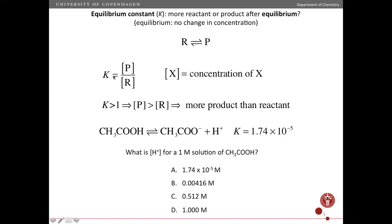And the equilibrium constant, which is always written as K, is the concentration of product divided by the concentration of reactant. So if K is larger than one, then you have more product. The concentration of product is larger than the concentration of reactant. And vice versa, if K is less than one, if K is equal to one, then you have an equal amount of reactant and product.